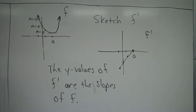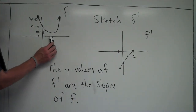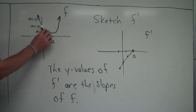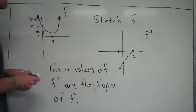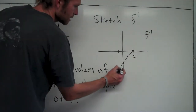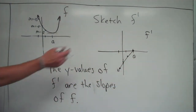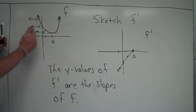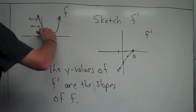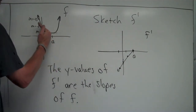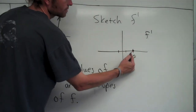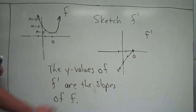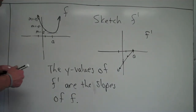Looking at this, it makes sense: to the left of a, the slopes of f are negative, and on the f prime graph, all the y-values are negative. Closer to a, the slopes are pretty close to zero, and as I move further and further to the left, the slopes get steeper — so the y-values on f prime decrease in value, just like the slopes do.